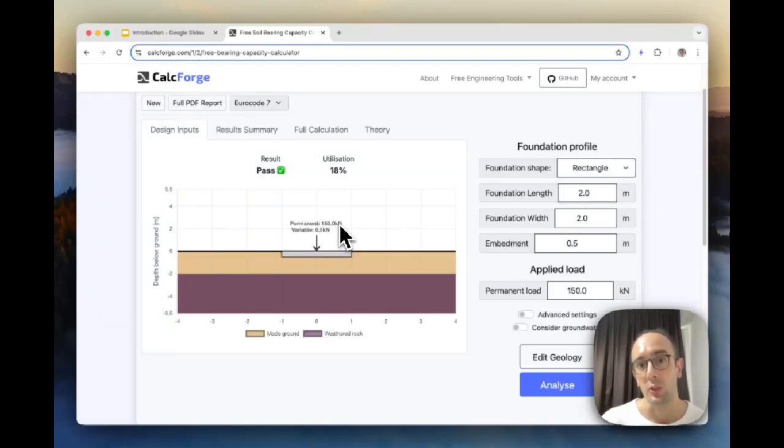It will tell you what the permanent load is that you're applying, so this is like your long-term load of the building, and then a variable load. So this could be like a load of vehicles accessing the site or it could be pedestrians or it's some sort of varying load. And then below this you have your different geological layers so you have made ground and weathered rock and all of this can be adjustable and you can customize it to suit your project.